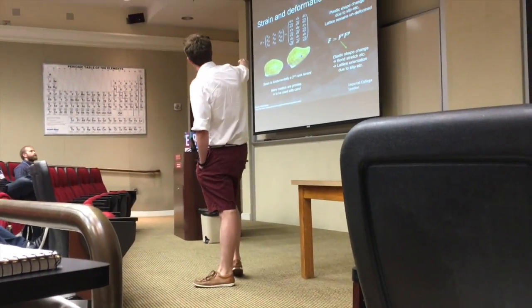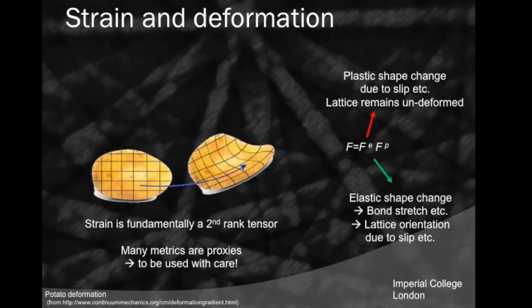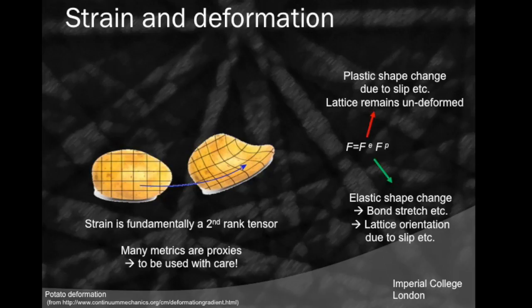Strain is the deformation of an object from an initial configuration to a deformed configuration. Ideally, we map that change in configuration across a grid within our sample to see how that grain changes shape. Formally, if we think of taking any object and deforming it, we can describe this using Lee's multiplicative decomposition theory — we have an elastic portion and a plastic portion — and EBSD can only access the elastic portion.